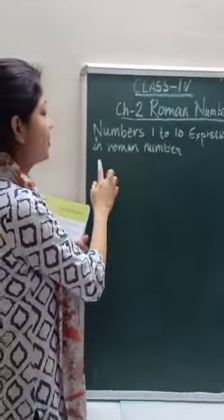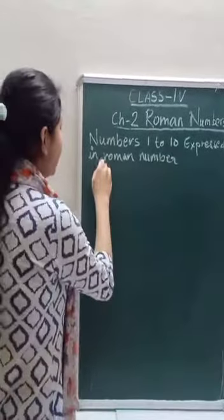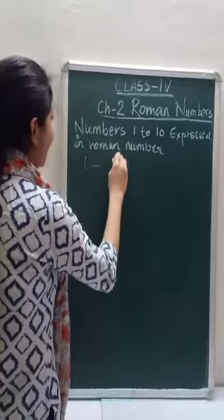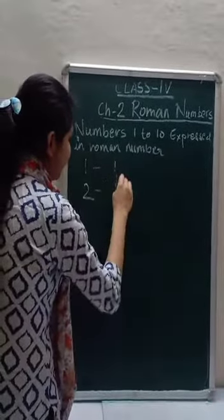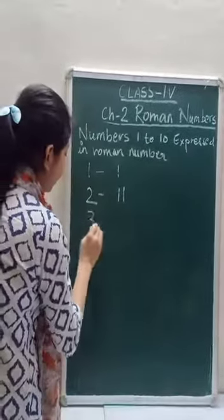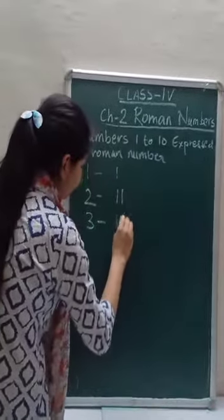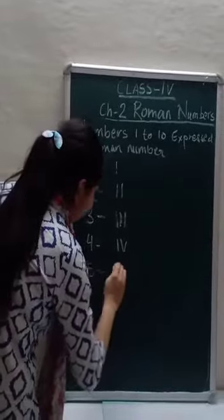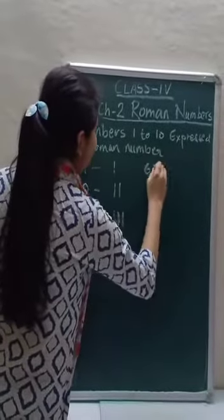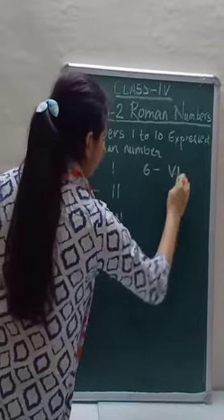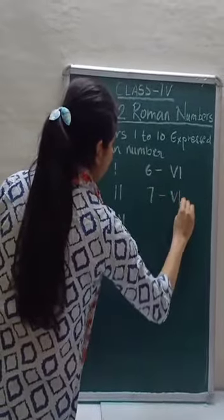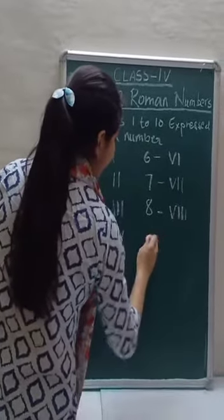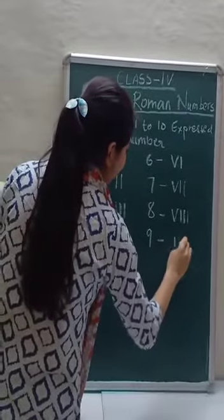Numbers 1 to 10 expressed in Roman Numbers. So we see how to express 1 to 10 in Roman Numbers: 1 is I, 2 is II (1 plus 1), 3 is III, 4, 5, 6, 7, 8, 9, and 10.